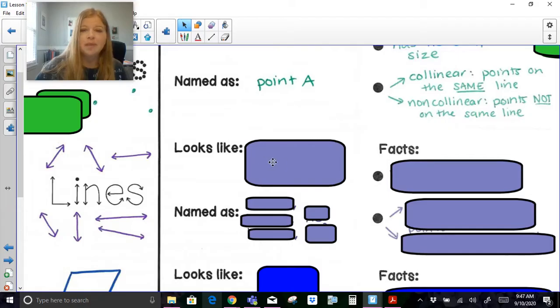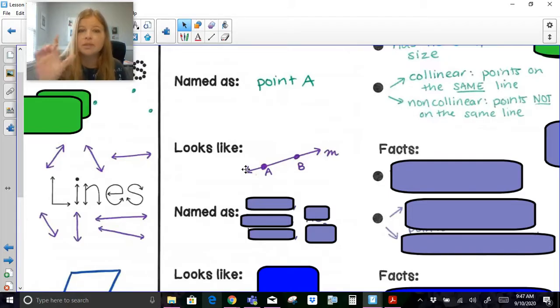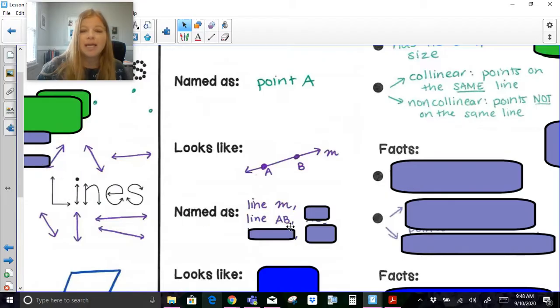Now a line. A line is going to be where we have a line segment with arrows at either end. You always need those arrows to denote a line. There's always at least two points that create a line. Here I have point A and point B, and the points are always labeled with capital letters, but then a line is also labeled with a lowercase script letter. Here I'm using the lowercase script letter M.